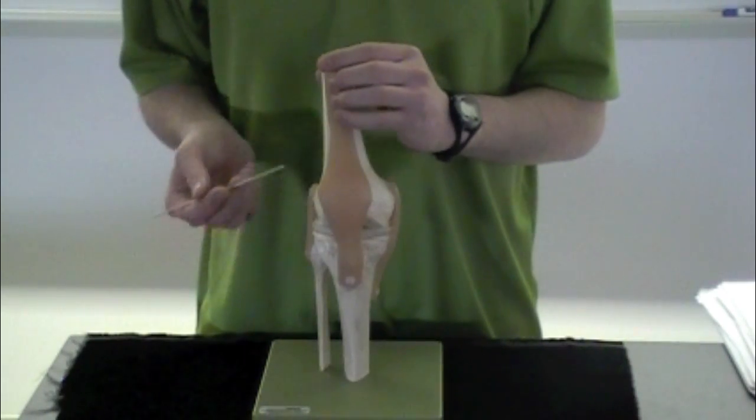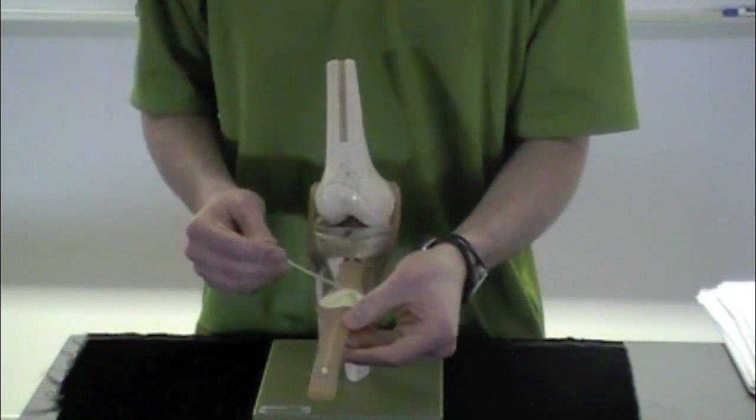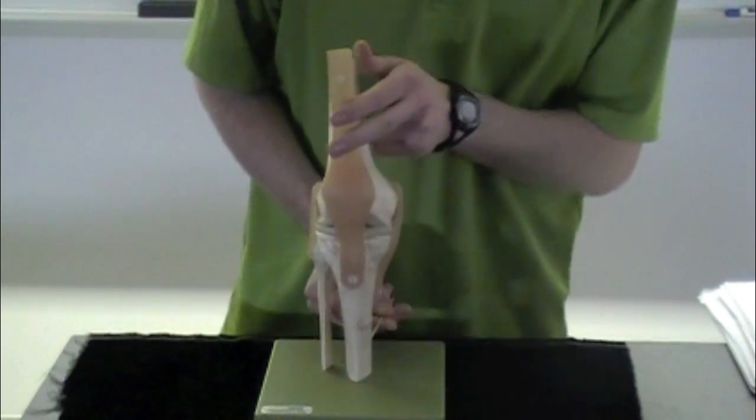We're going to be going over the ligaments of the knee here, just to get you oriented to start off with. Here's the bones. We have the femur up here. We have your patella right there. Laterally, we have your fibula. Medially, we have your tibia.